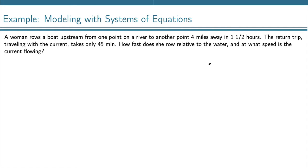A woman rows a boat upstream from one point on a river to another point four miles away in one and a half hours. The return trip traveling with the current takes only 45 minutes. How fast does she row relative to the water, and at what speed is the current flowing?